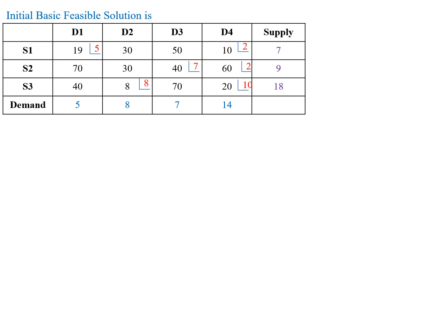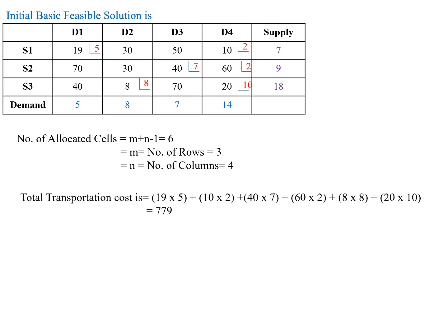Now draw the transportation table with allocations. The number of allocated cells is 6, which equals m plus n minus 1, where m equals the number of rows and n equals the number of columns. Transportation cost equals 19×5 plus 10×2 plus 40×7 plus 16×2 plus 8×8 plus 20×10. The total transportation cost is 779. This is the solution for the transportation problem using the BIM method. Thank you.